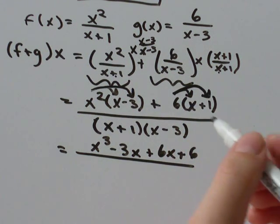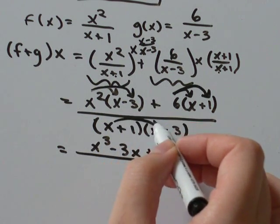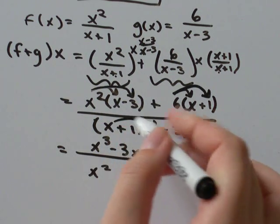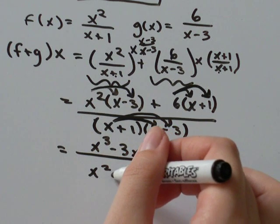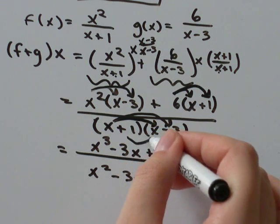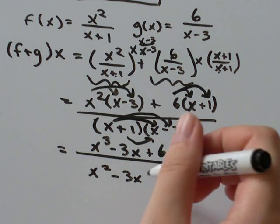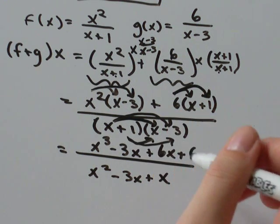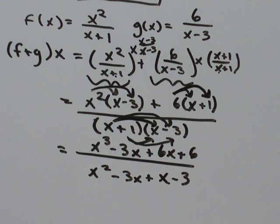On the bottom, we're going to need to FOIL this. x times x is x squared, x times negative 3 is negative 3x, positive 1 times x would just be positive x, and positive 1 times negative 3 would be negative 3.